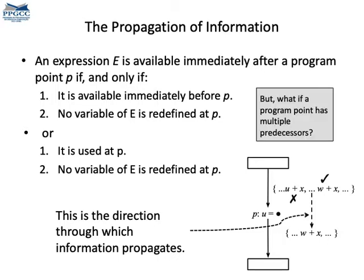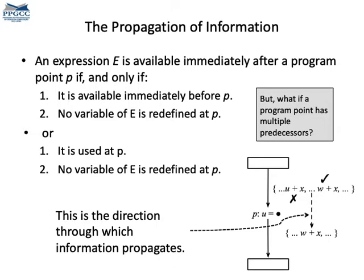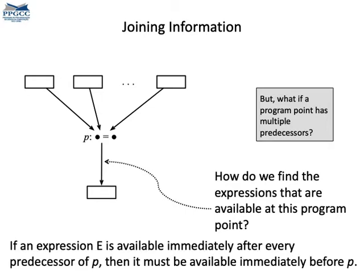But what if we have program points with multiple predecessors? How do we join information? In other words, if we have a join point in the program, what are the expressions that are available right after that point? Well, in this case, we must take the intersection of the expressions available at all the predecessors. In other words, an expression is available at a program point P if it's available at every path that reaches P.